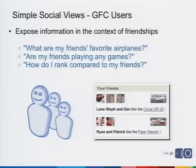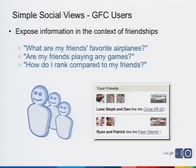Another interesting view is showing Friend Connect users what their friends have been doing on the website. Here's a hypothetical view of the Plane Crazy site showing what your friends have favorited — Lane, Steph, and Dan like the Cirrus SR22, while Ryan and Patrick like the Piper Warrior. Now I can see these friends of mine have different tastes, and I get some interesting signals driving me toward these two planes. Taking this in the context of a different type of site, you could do things like: are my friends playing any game? How do I rank compared to my friends?